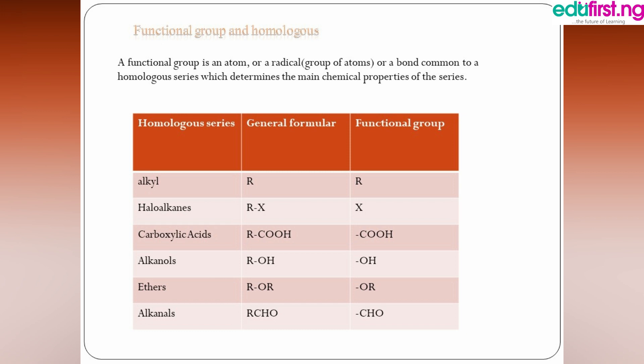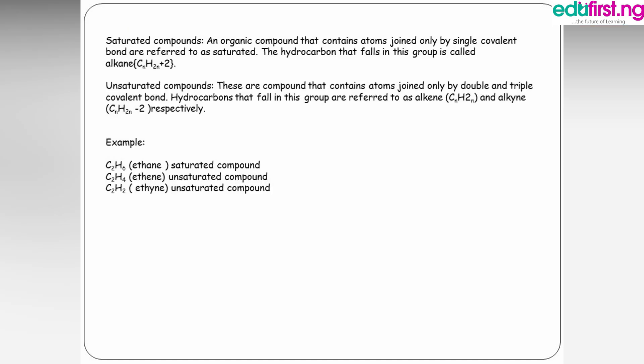A functional group is an atom, a radical — that is, a group of atoms — or a bond common to a homologous series which determines the main chemical properties of the series. For example, where we have the functional group -COOH, that indicates a carboxylic acid. So where we have -COOH, that's a carboxylic acid.